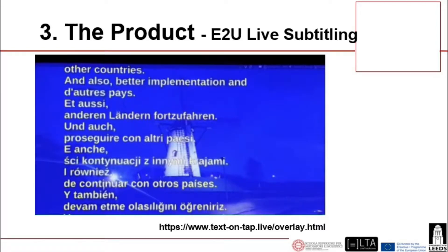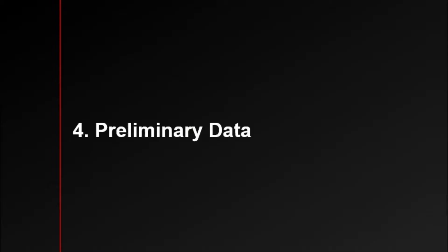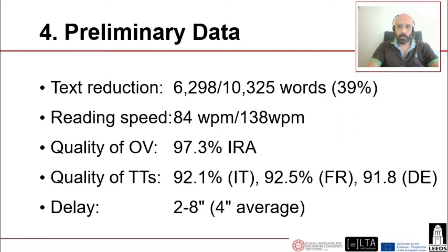Section four: preliminary data. Here are some preliminary data which show that the source text was highly reduced — a little more than 6,000 words were used to subtitle more than 10,000 words, meaning a reduction of almost 40 percent. Consequently, the viewers' reading speed was reduced to 84 words per minute without undermining the understanding of the original text.